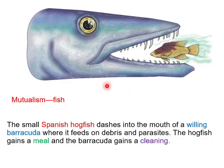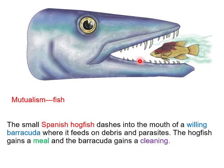Here is another example of mutualism. This is the small Spanish hawkfish inside the mouth of a willing barracuda fish, where it feeds on debris and parasites. The hawkfish gains a meal and the barracuda gains a cleaning. This interaction is mutual, and we call it mutualism.